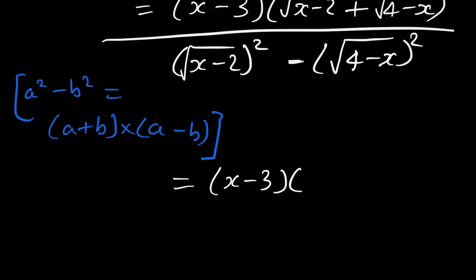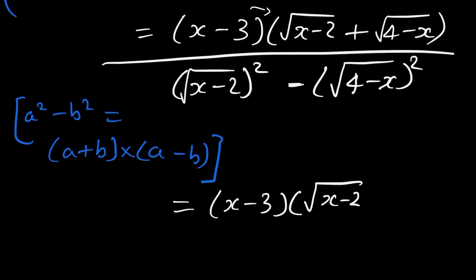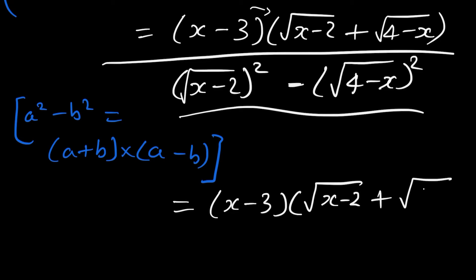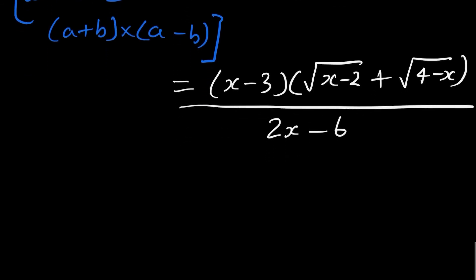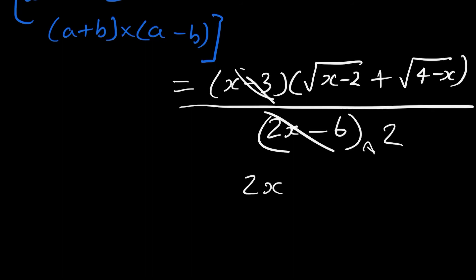We solve the denominator first. After the calculation, the denominator becomes 2x minus 6. We can then cancel x minus 3 from the numerator with the denominator, since 2x minus 6 equals 2 times x minus 3. When we cancel x minus 3, we're left with 2 in the denominator.